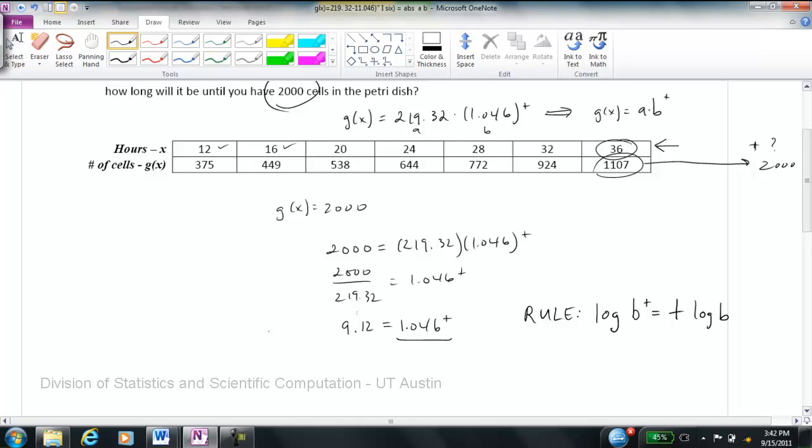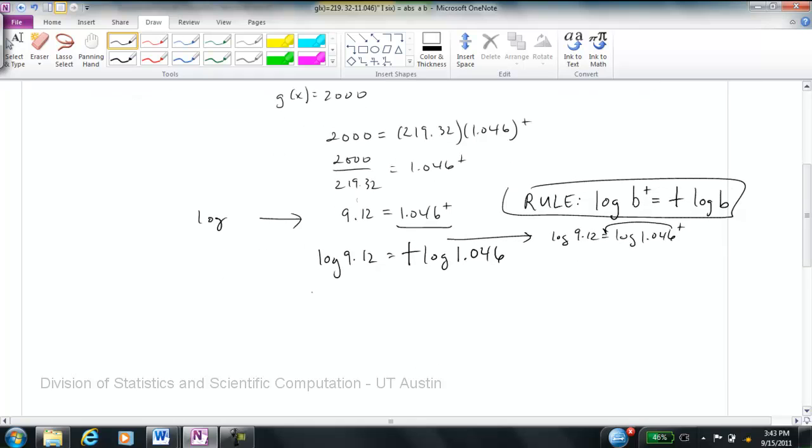So what I can do is take the log of both sides. So the log of 9.12 is equal to t log 1.046. Because what I did was this little step here was log 9.12 is equal to log 1.046 to the t. And we know from this rule that my t goes over in front.